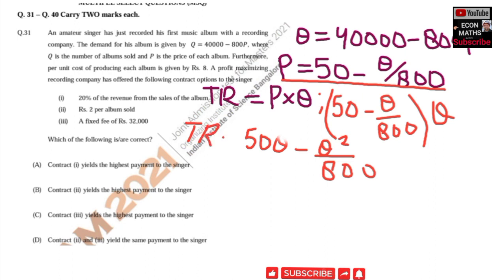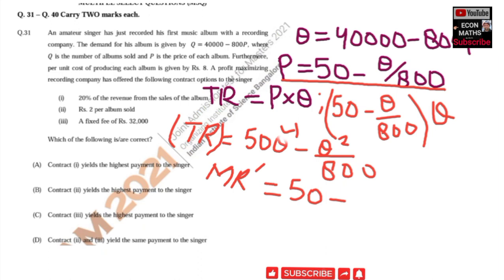Marginal revenue is the derivative of total revenue with respect to quantity. Differentiating, the derivative of Q is 1, giving 50, and the derivative of Q² is 2Q, so we get 2Q/800 = Q/400. Therefore, marginal revenue MR = 50 − Q/400.